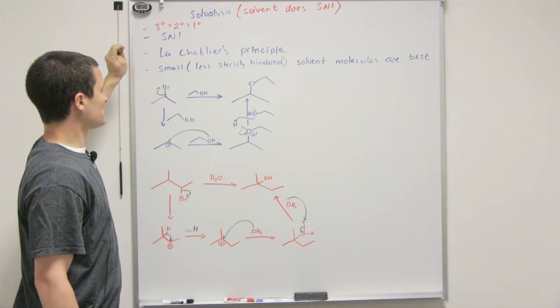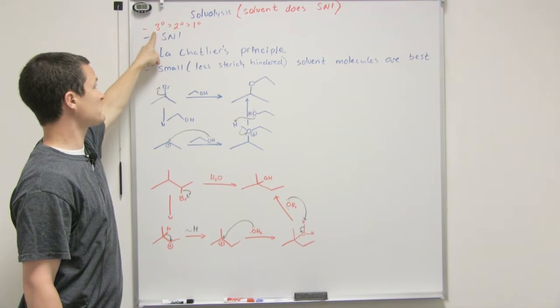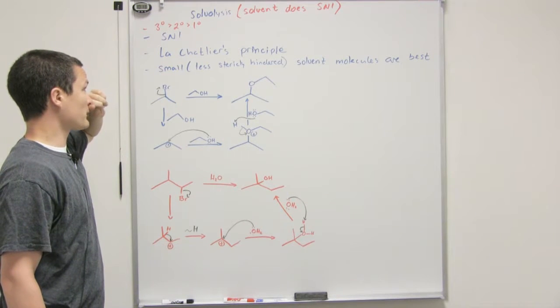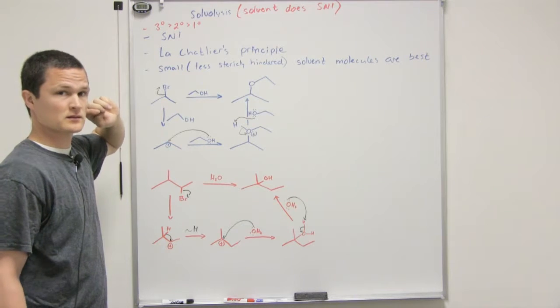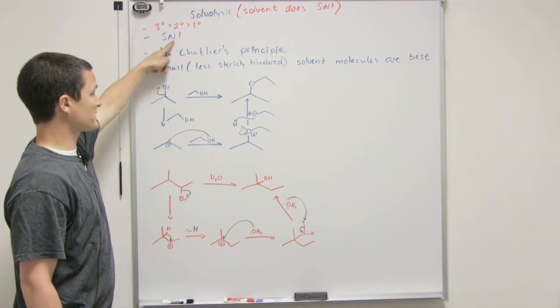Like with SN1 in general we know that tertiary is faster than secondary which is faster than primary. We do solvolysis by the way on alkyl halides most of the time and like I said it proceeds by SN1.